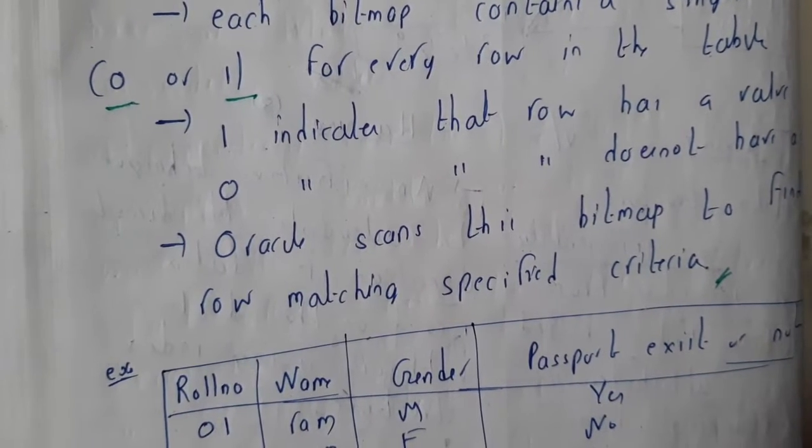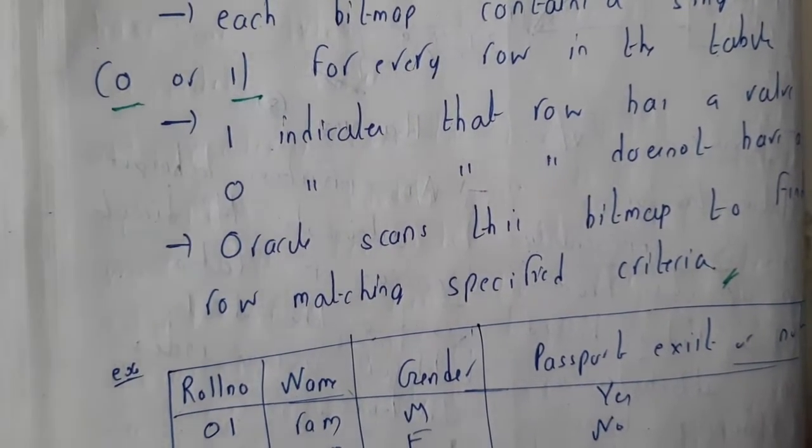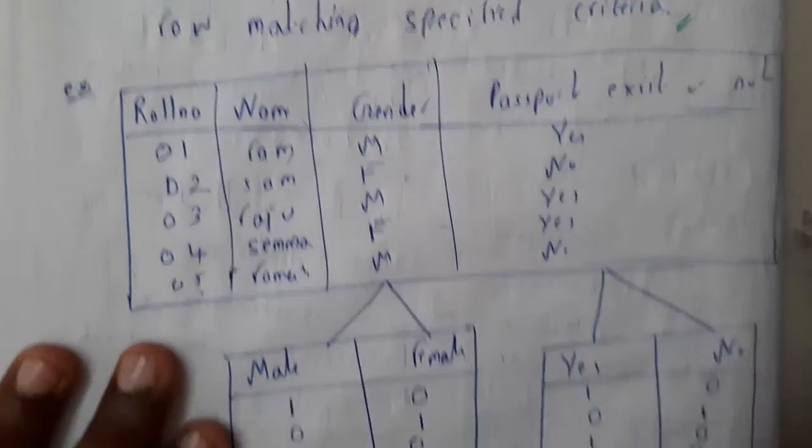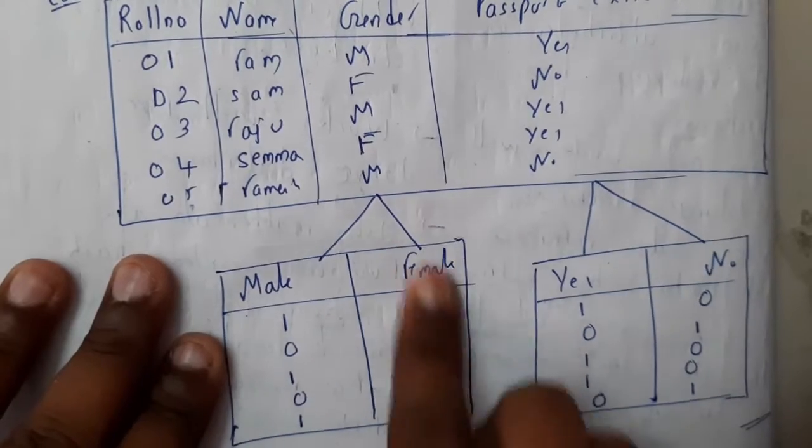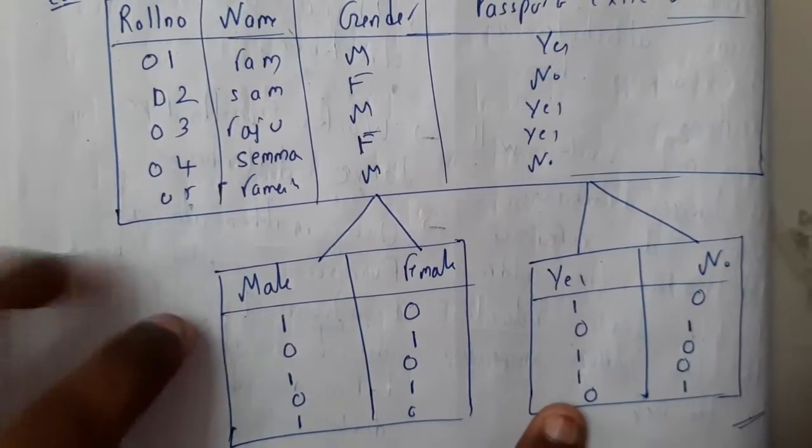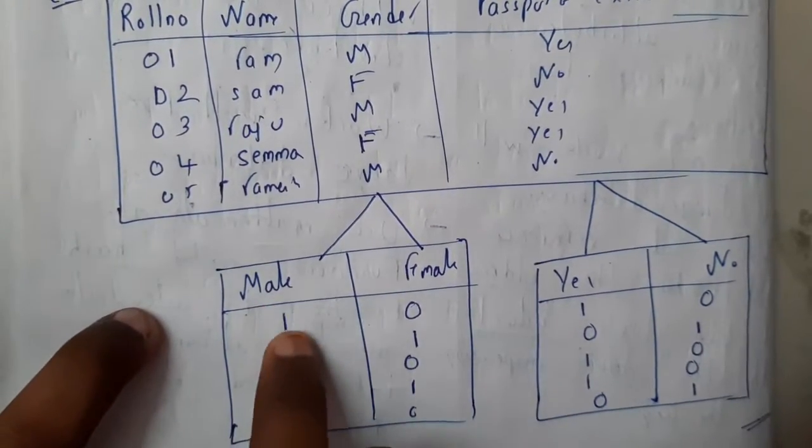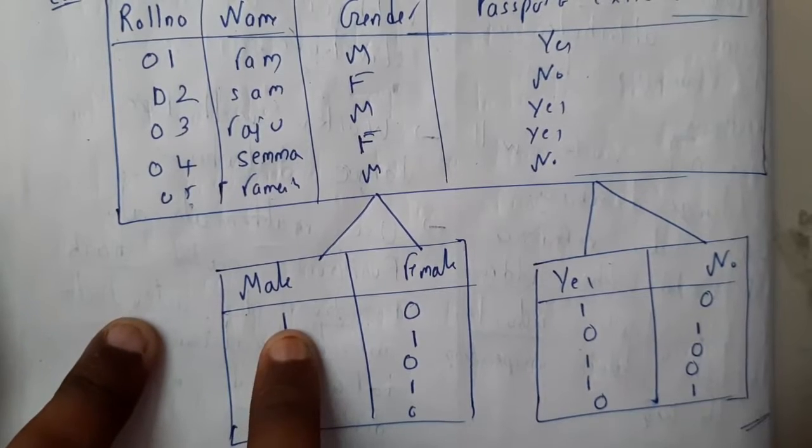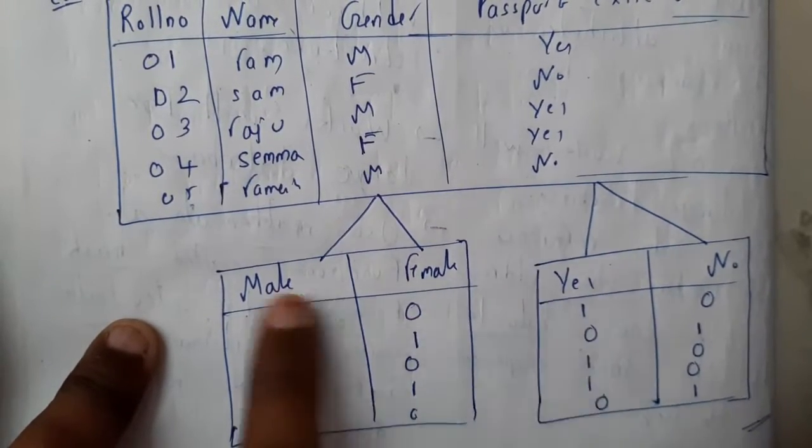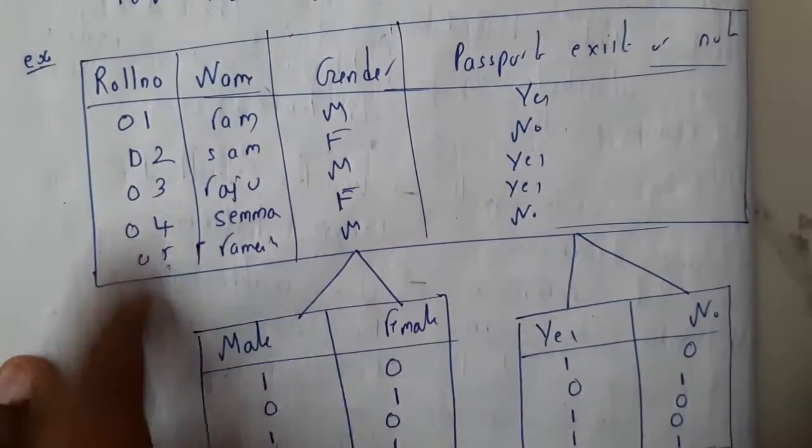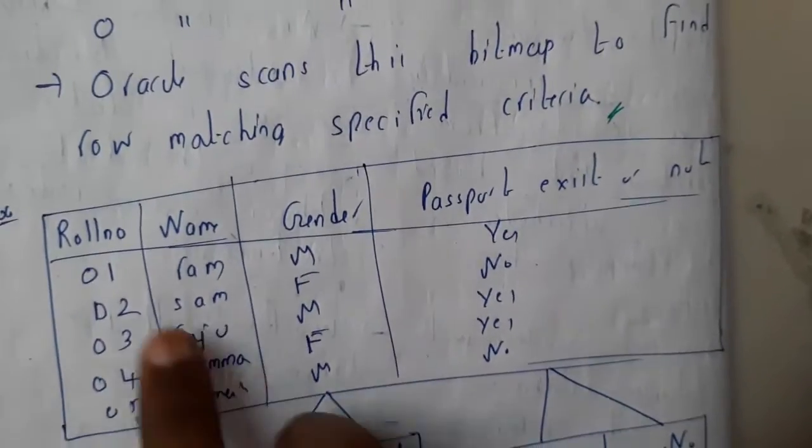Indirectly it will be having, let us assume we are having three departments, so it will be having department one, department two, department three. If the first guy is in department one, it will be considering here one. In department two he will not be there, so it will be zero. In this way it will be analyzing. We will be going through this example, you'll be understanding, don't worry.